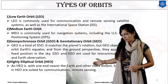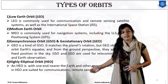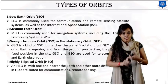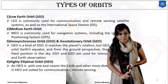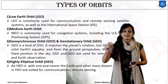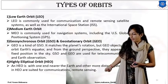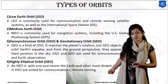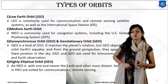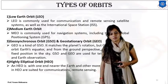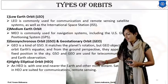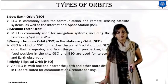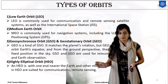The fourth is the Highly Elliptical Orbit. In HEO, there is one point near the surface of the Earth and another point at a greater distance. That's why HEO is more suitable for communication and remote sensing purposes.